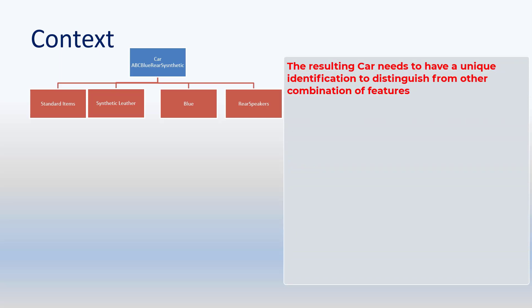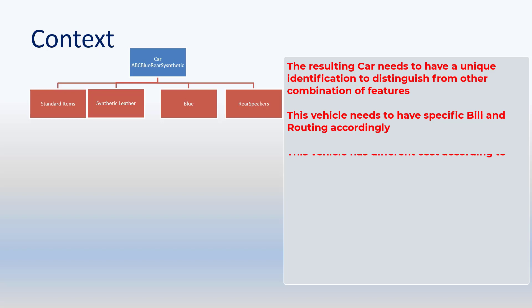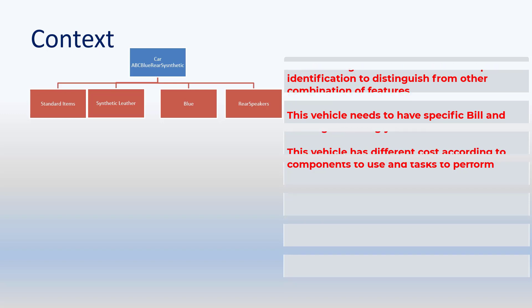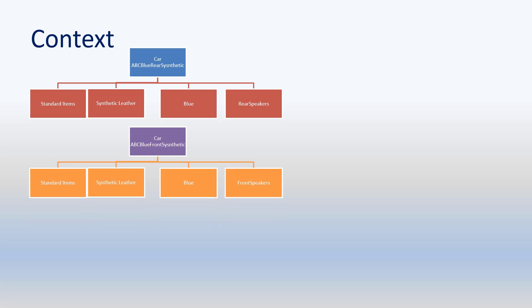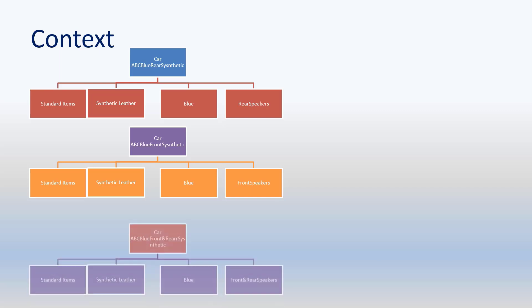You need to give a special identification to the vehicle of this combination to distinguish it from other combinations. In addition, the vehicle will have a specific BOM and routing according to these additional components added to the standard components to make the vehicle. Depending on the cost and effort of placing speakers at the rear of the vehicle, the cost of synthetic leather, and the blue color body, the cost and price of the vehicle will be calculated. If another customer opts for front position speakers with all other selections unchanged — blue color body, synthetic leather seats, and front speakers — even though the change is just for one feature, you need another identification for this vehicle, and the BOM, routing, cost, and price will all change.